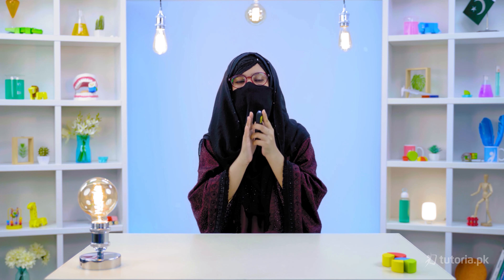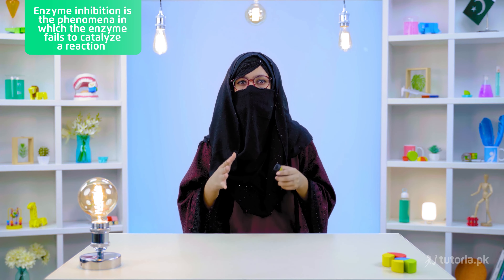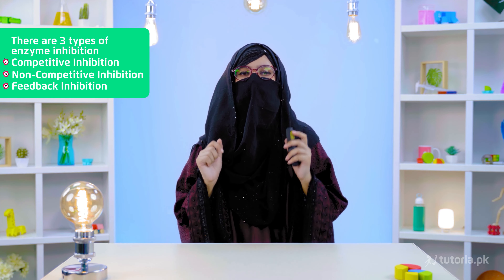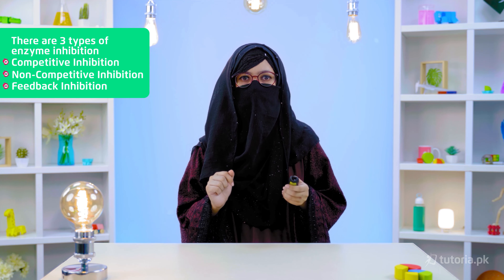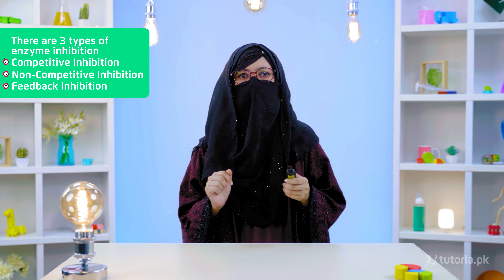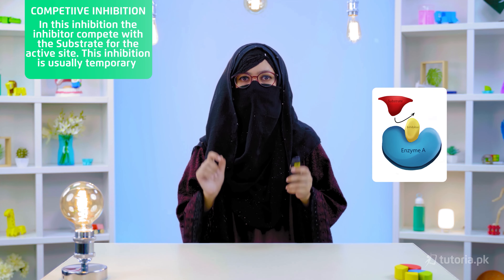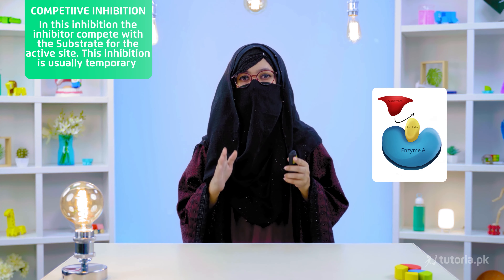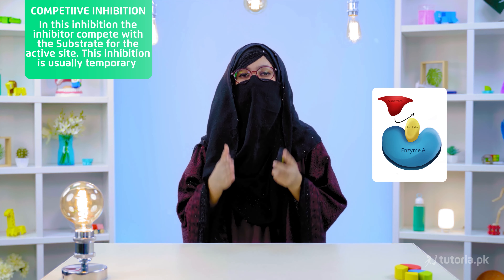Now let's talk about inhibition. The word inhibition comes from 'to hold back.' Enzyme inhibition is the phenomenon due to which an enzyme cannot perform its catalytic reaction. The reason is certain molecules that change the enzyme's structure or interfere with it so that the enzyme cannot properly perform its reaction. There are three types of enzyme inhibition: competitive inhibition, non-competitive inhibition, and feedback inhibition. In competitive inhibition, the inhibitor molecule competes with the substrate for the active site.